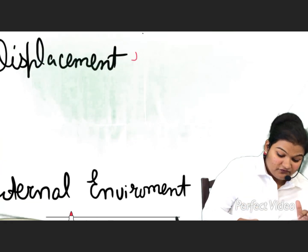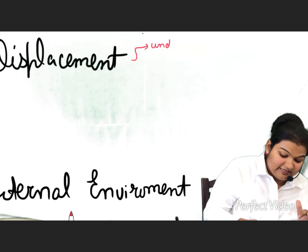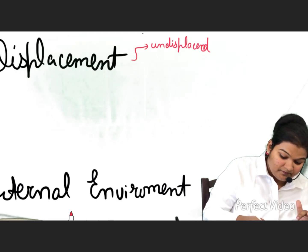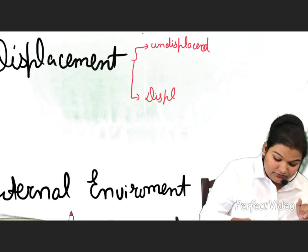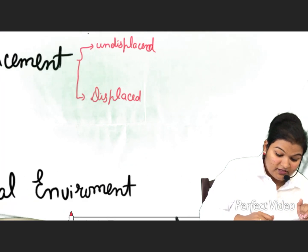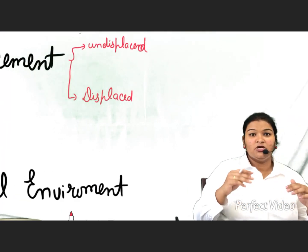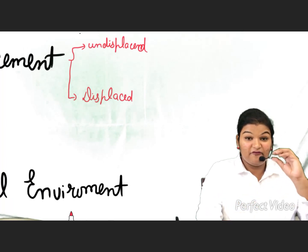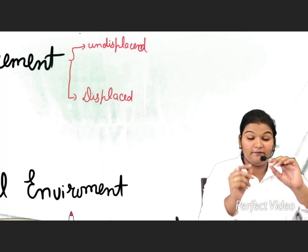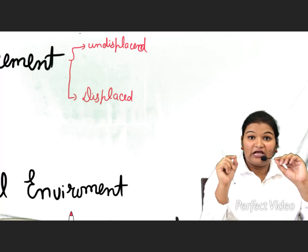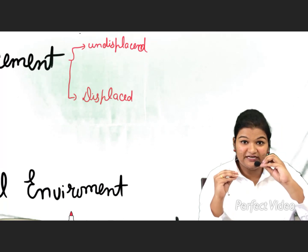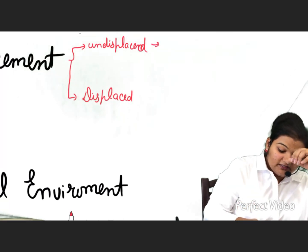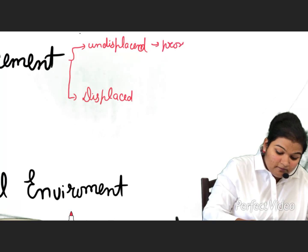In displacement-based classification, we have two types: undisplaced fracture and displaced fracture. In undisplaced fracture, it can be easily identified because the two fracture ends are in proximity to each other.